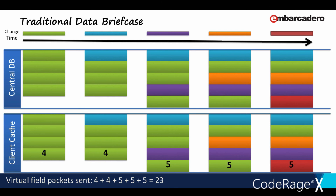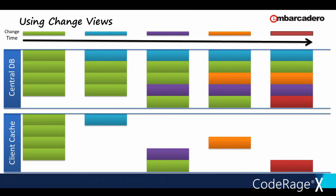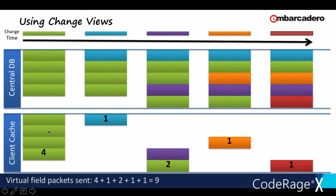If we look at what's actually needed: the second item going across in both rows here has never changed. If we clear out what we don't need to know, we're down to nine data packets rather than 23. Imagine that second item is a photo — that's a lot of data. Change Views is about getting straight to specifically what you need to know.